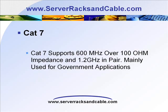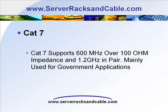Cat 7 supports transmission frequencies up to 600 MHz over 100 ohm impedance. Cat 7 has a wide area of implementation, like full motion videos, government and manufacturing specs, and fully shielded systems.